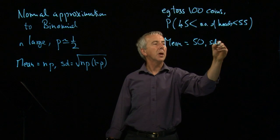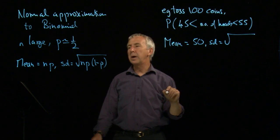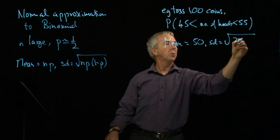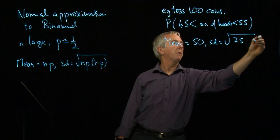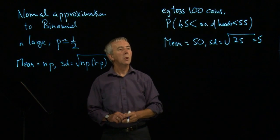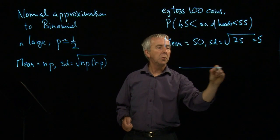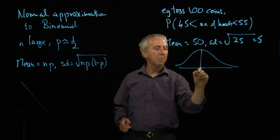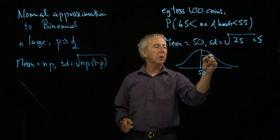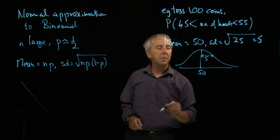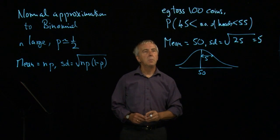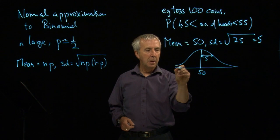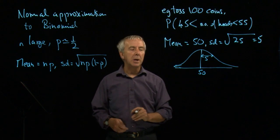And the standard deviation is the square root of 50 times a half, which is the square root of 25, which is 5. So what we have here is a normal distribution with a mean of 50 and a standard deviation of 5. And we want to be above 45 and below 55. Now we have a little bit of an issue to mention.